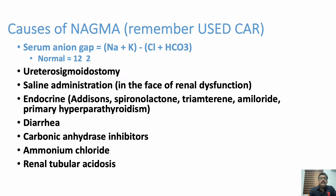To calculate the anion gap: sodium plus potassium (positively charged ions) minus chloride plus bicarbonate (negatively charged ions). If the anion gap is 12 plus or minus 2, that means 10 to 14, it is normal. If it is above 12, it is high anion gap metabolic acidosis. If it is 10 to 12, it is normal anion gap metabolic acidosis.